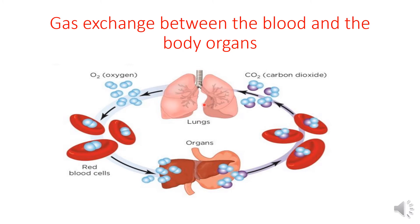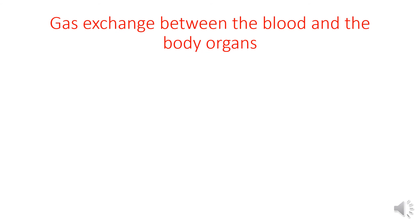The oxygen gas passes into the blood and is transported to the body organs. The body organs take the oxygen gas and reject the carbon dioxide gas. Then the blood transports the carbon dioxide gas into the lungs to be rejected by exhalation. Now let's repeat: gas exchange between the blood and the body organs.